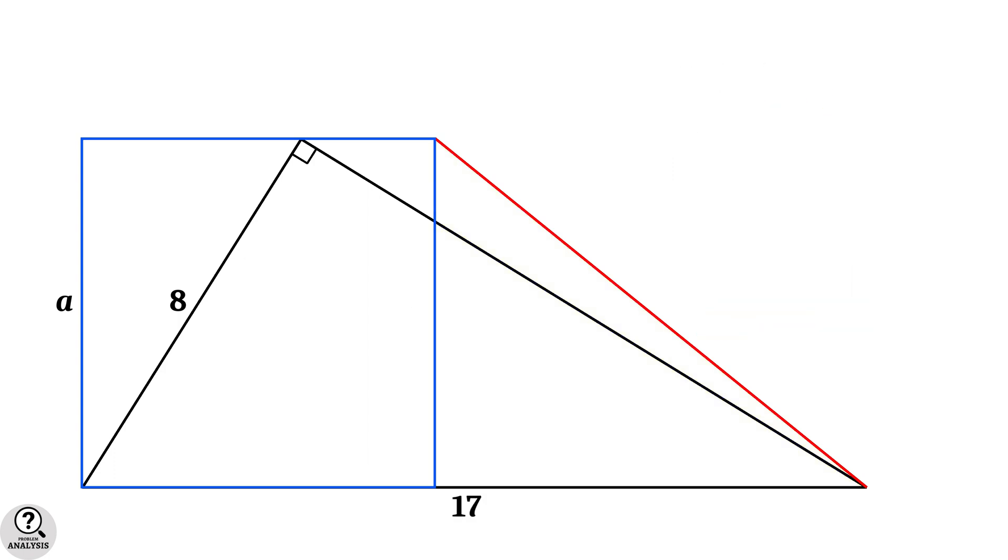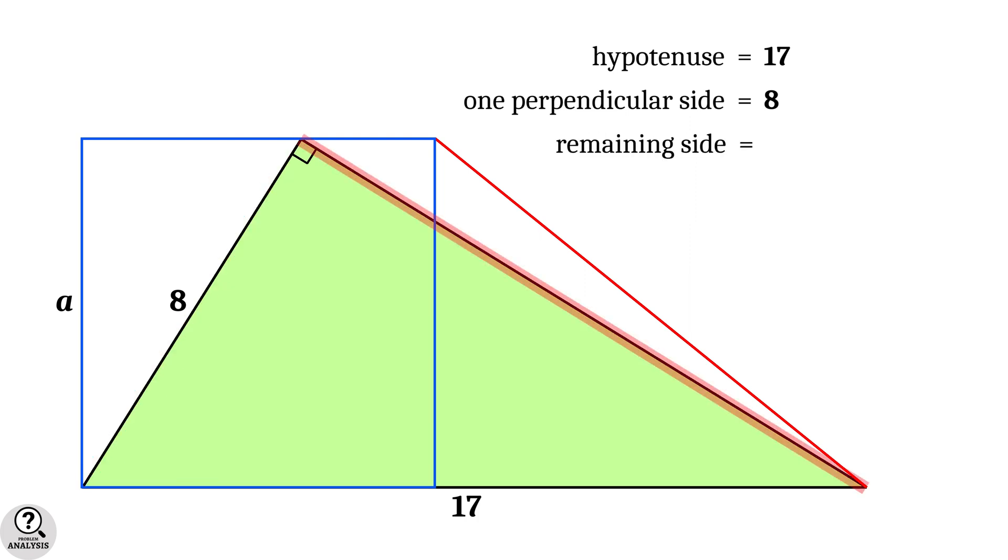Now, in the figure, consider this right triangle. Its hypotenuse is equal to 17 and one of the perpendicular sides is equal to 8. Then the remaining perpendicular side is equal to square root of 17 square minus 8 square by using the Pythagoras theorem. And that is equal to square root of 289 minus 64 equal to root 225. That is equal to 15 units.